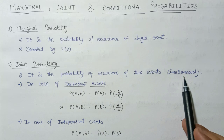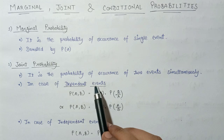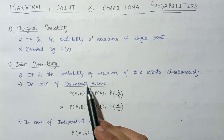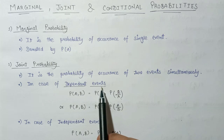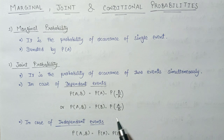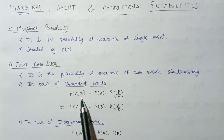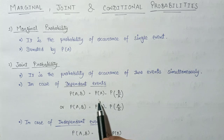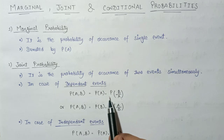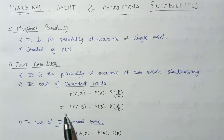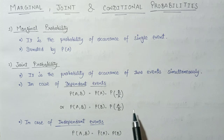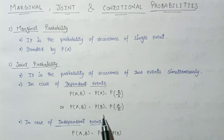We can say that joint probability is the probability of occurrence of two events simultaneously. In the case of joint probability, there are two cases: dependent events and independent events. For dependent events, the joint probability of event A and B is given as P(A) × P(B|A). It can also be written as P(B) × P(A|B).